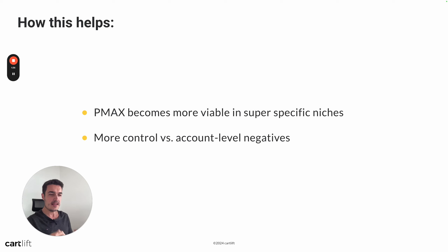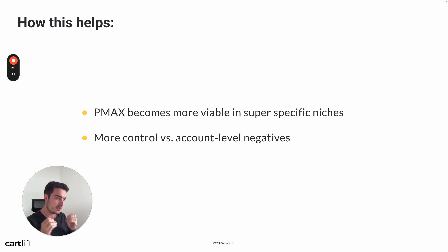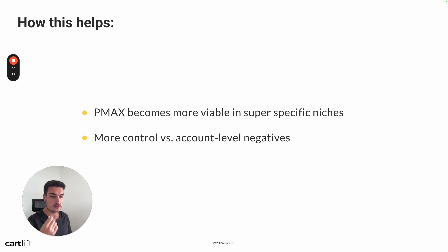Right now with the account-level negatives, yes it's better than nothing, but you cannot really distinguish. Maybe there's a campaign where you want to use those negatives and maybe there's another one where you don't. And most importantly, you will share those across all your campaigns — across all your search campaigns, across all your shopping campaigns — and most of the time we don't want a single list for everything. So we have to be very careful about what exactly we are putting into those account-level negative keyword lists, because maybe we just want them in a single or just two campaigns.